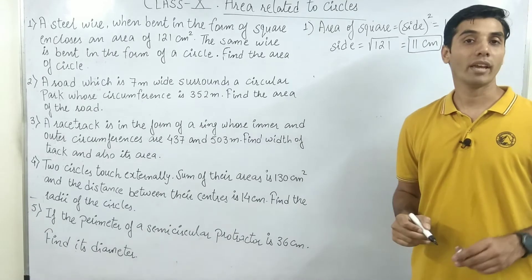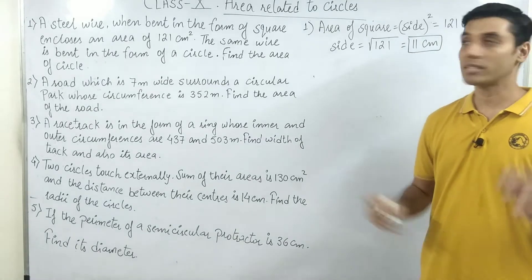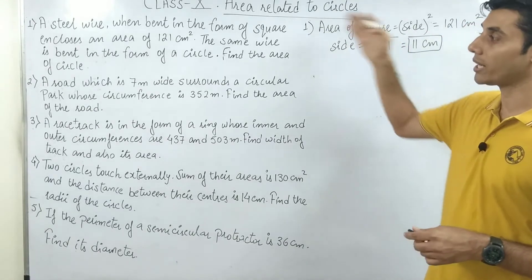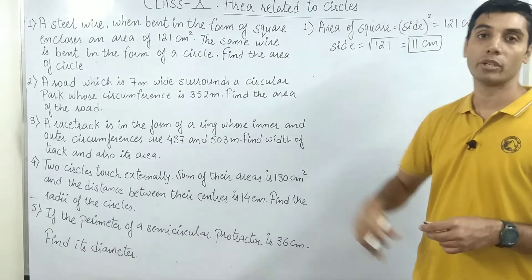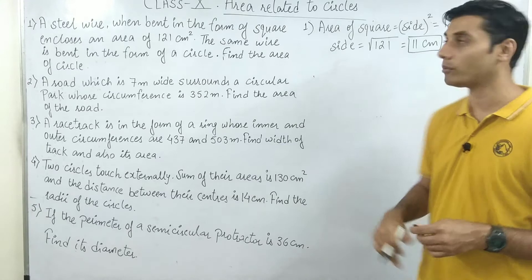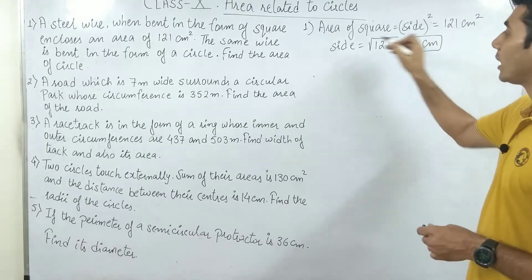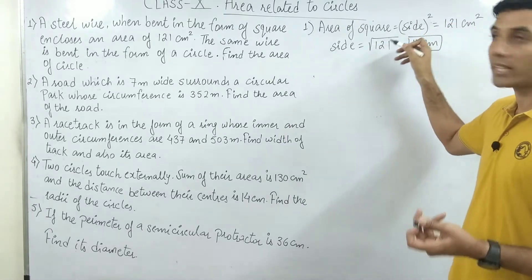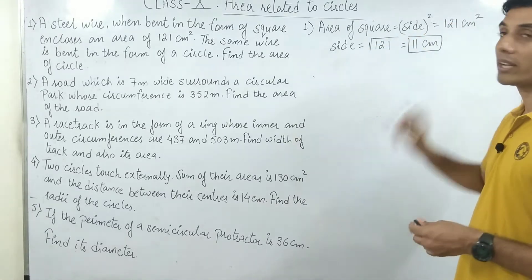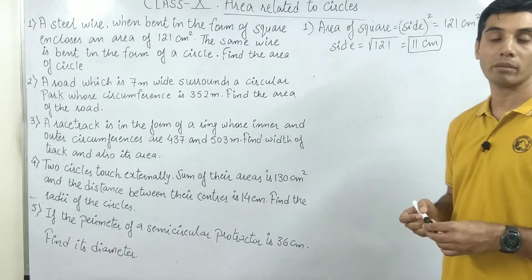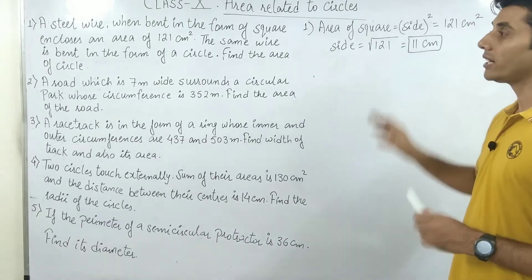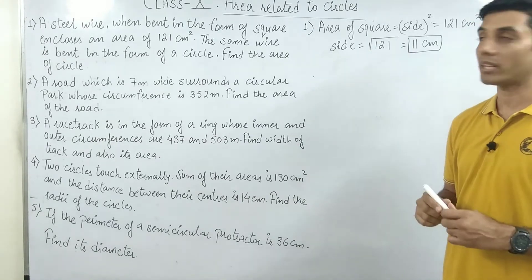Since the area was equal to side squared and that is already given as 121, when I take the square root, my answer is 11 cm. This means that one side is 11 cm.